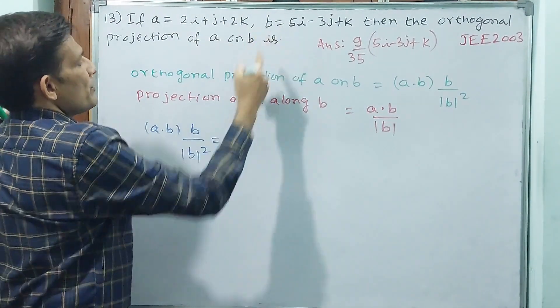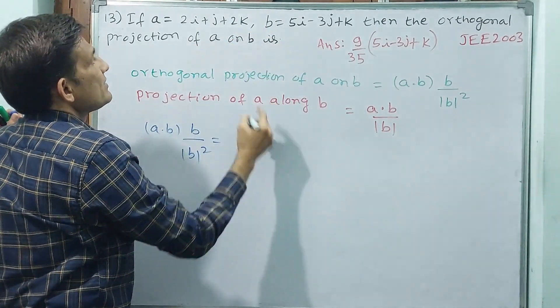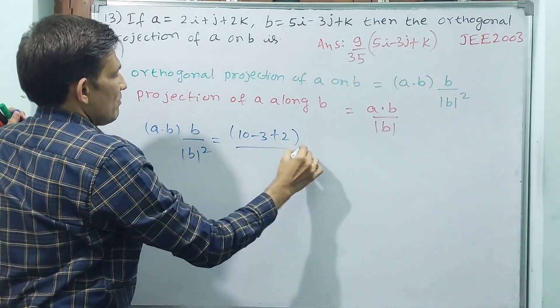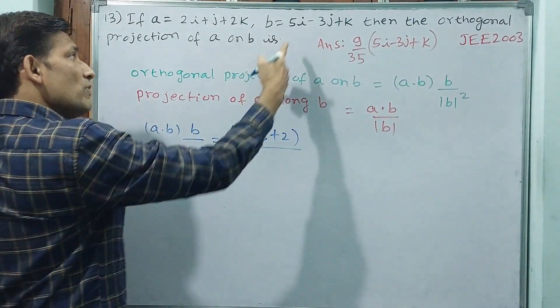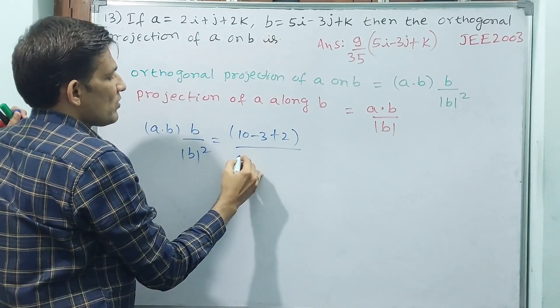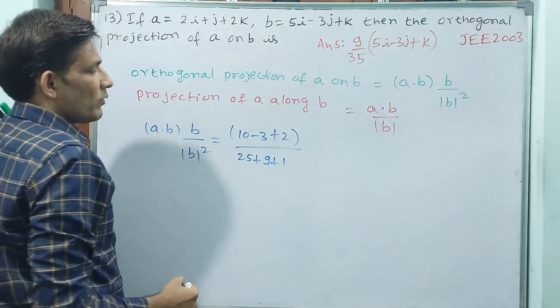That is equal to A dot B means 2 into 5, 10, minus 3, plus 2. By this scalar, modulus of B square. Modulus of B square means I don't put root, directly you write 5 square, 9, 1.